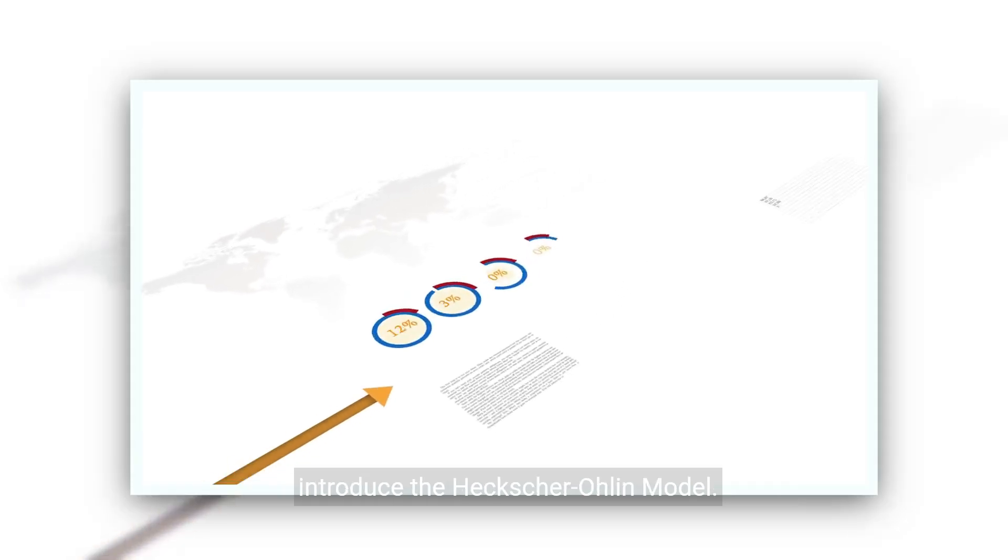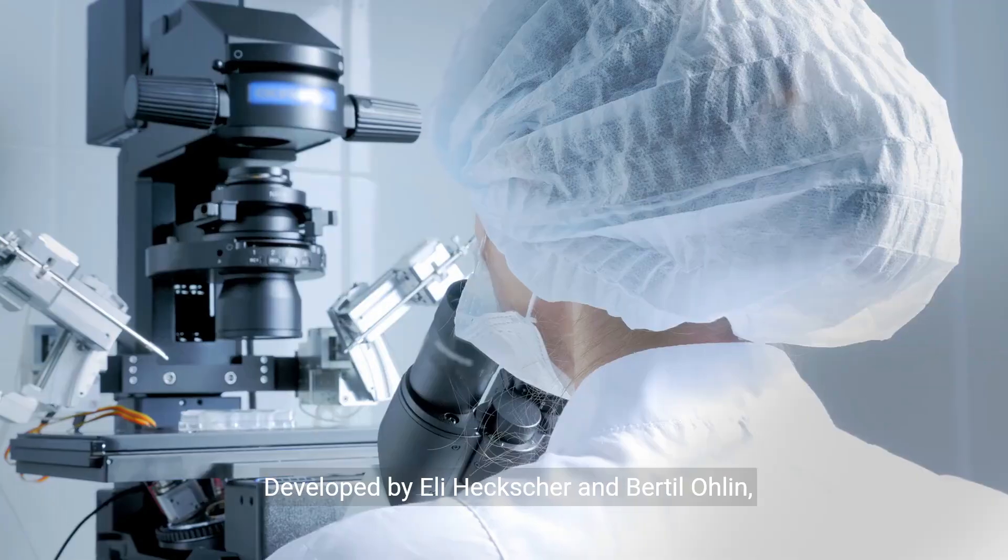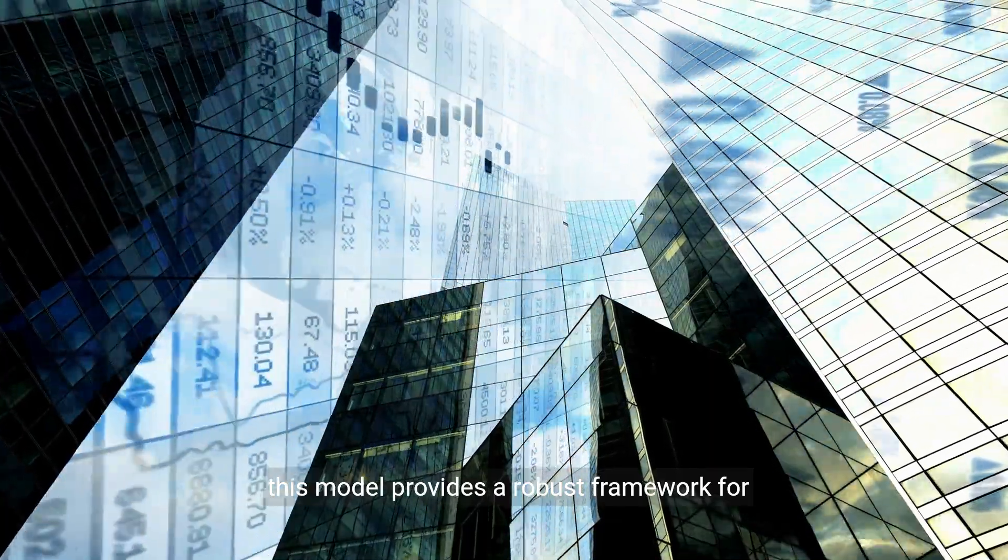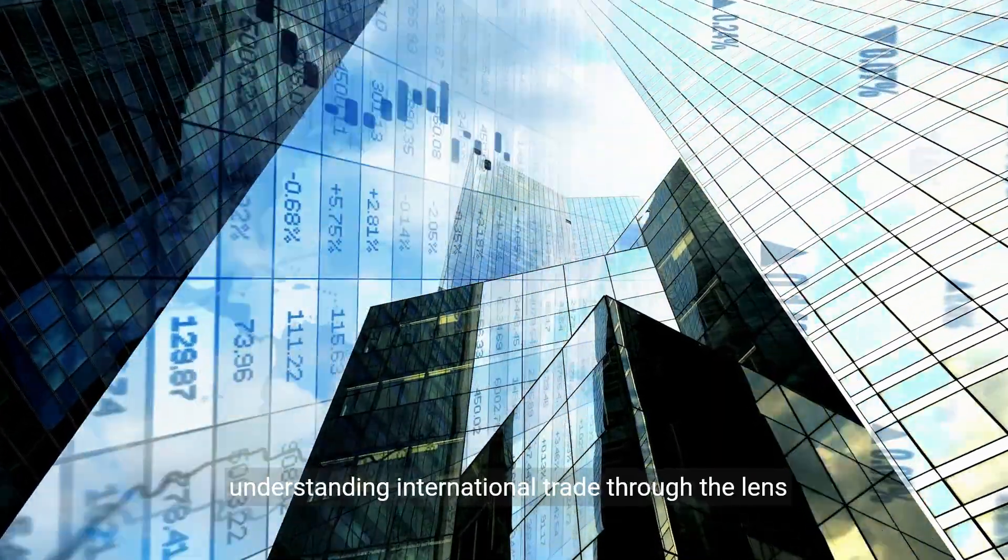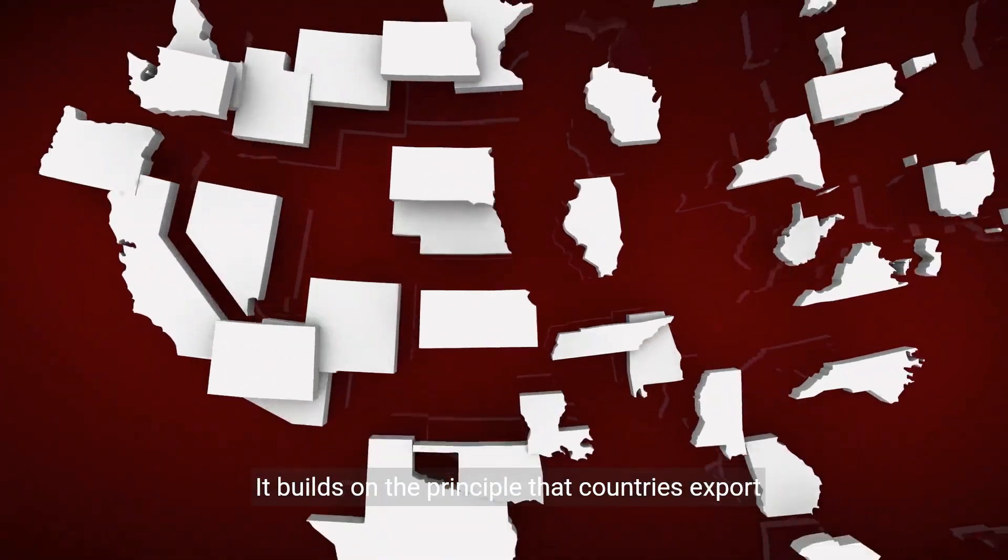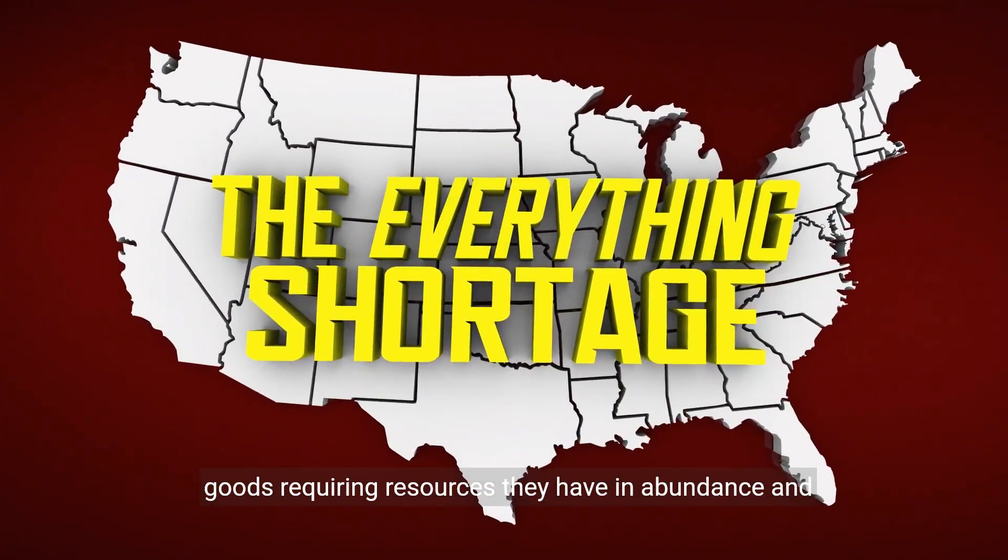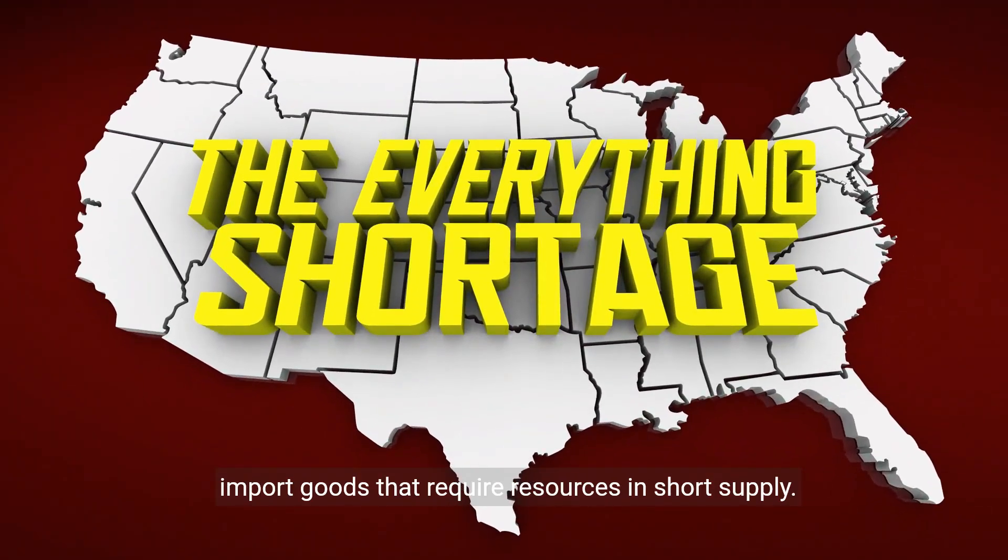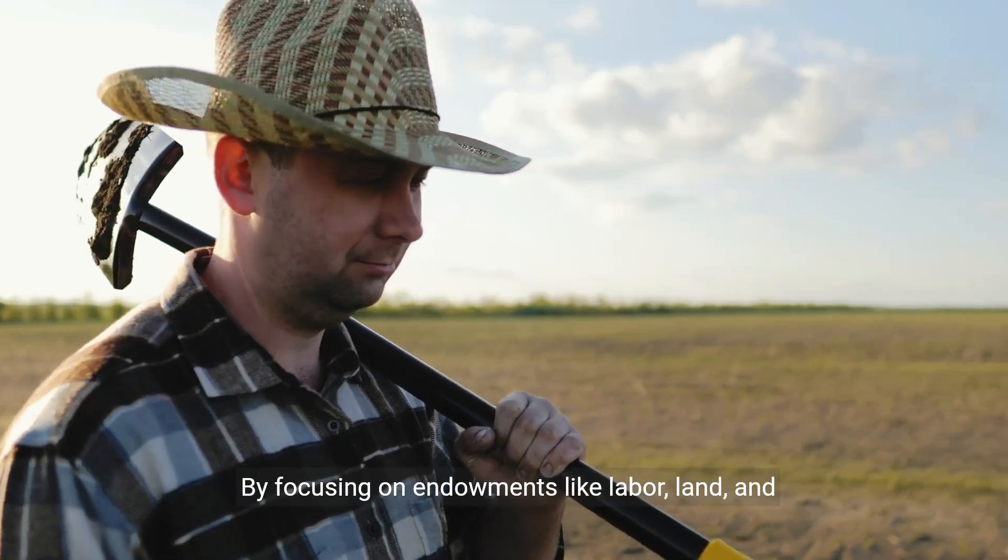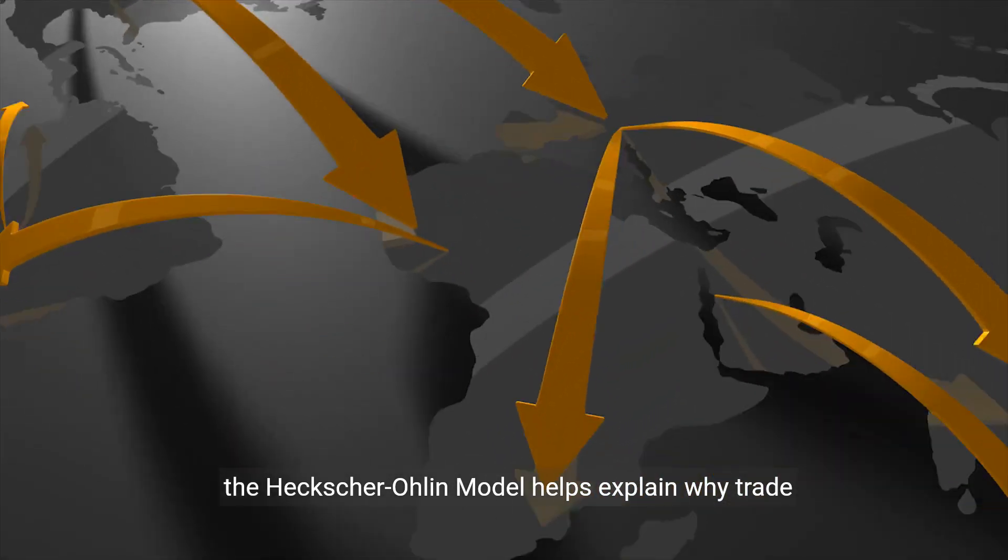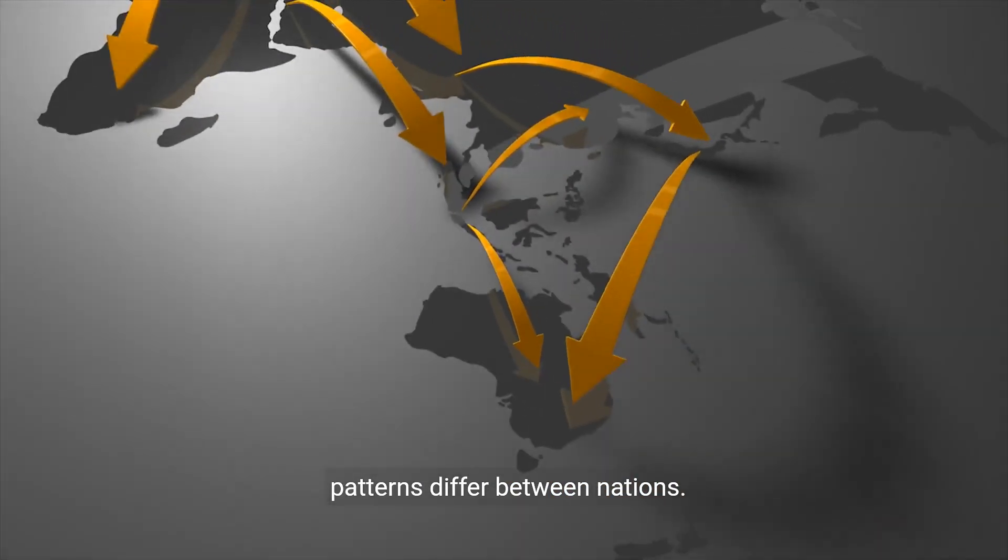To address the complexities we've discussed, let's introduce the Heckscher-Ohlin model. Developed by Eli Heckscher and Bertil Ohlin, this model provides a robust framework for understanding international trade through the lens of factor endowments. It builds on the principle that countries export goods requiring resources they have in abundance and import goods that require resources in short supply. By focusing on endowments like labor, land, and capital, the Heckscher-Ohlin model helps explain why trade patterns differ between nations.